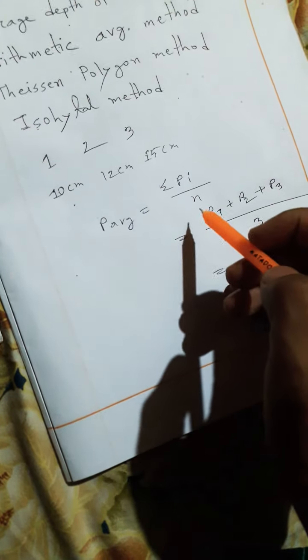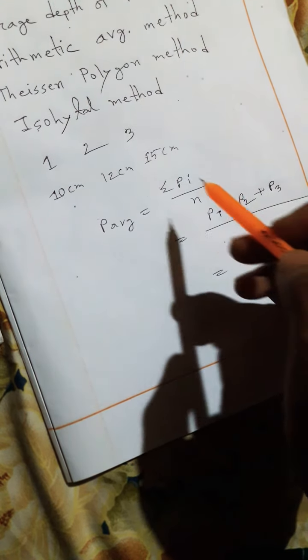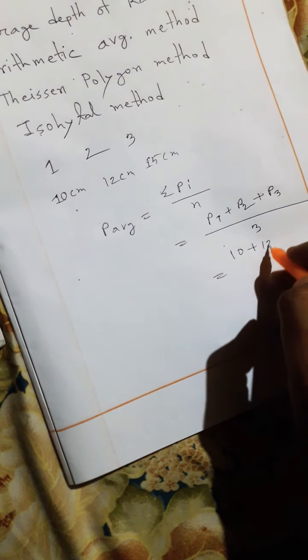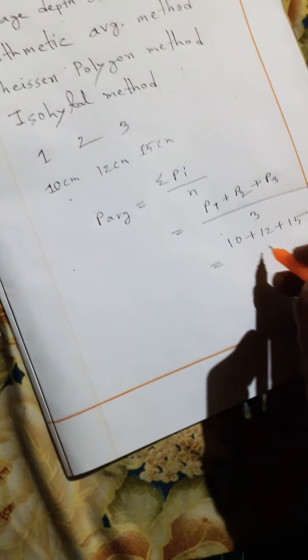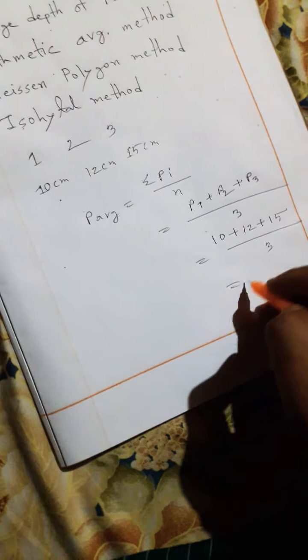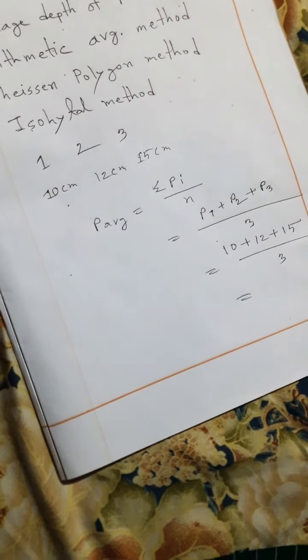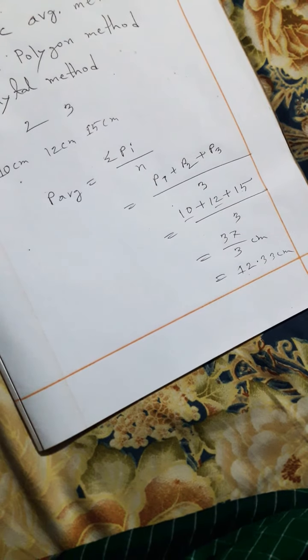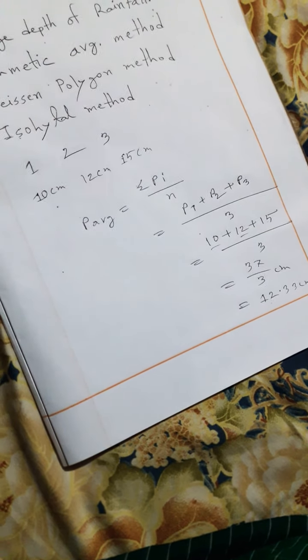P2 is 12 centimeters and P3 is 15 centimeters. So 10 plus 12 plus 15 divided by 3 equals 12.33 centimeters average depth of rainfall over the area.